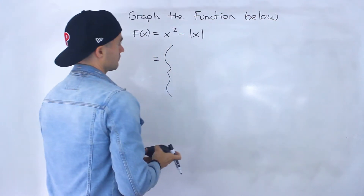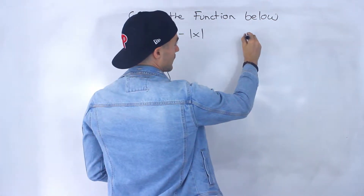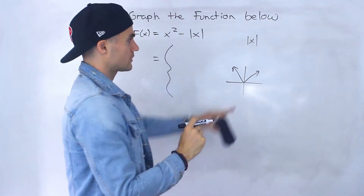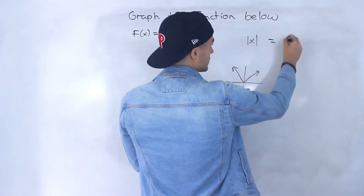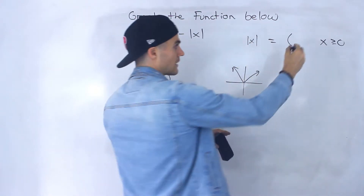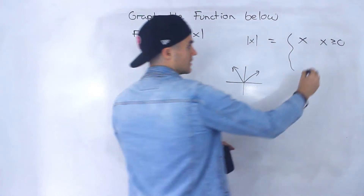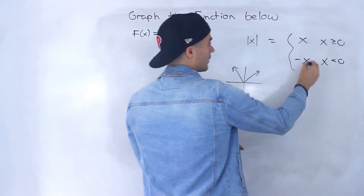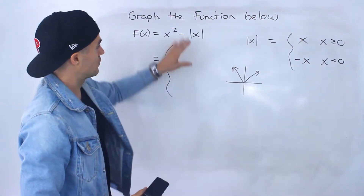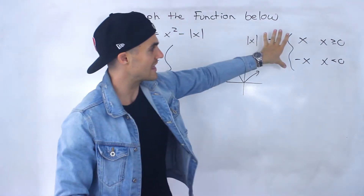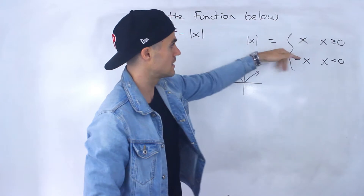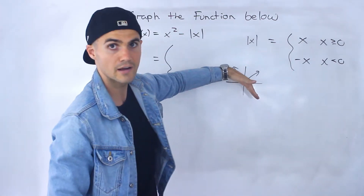To do that, we look at the absolute value of x first. Remember how the absolute value of x looks — we can take it and change it to a piecewise function. Notice that if x is greater than or equal to zero, the expression inside the absolute value stays as x. If x is less than zero, we multiply by negative one, so it becomes negative x. Ignoring the x squared part, this absolute value of x alone gives us this piecewise function: when x is greater than or equal to zero it's y equals x, and when x is less than zero it's y equals negative x.